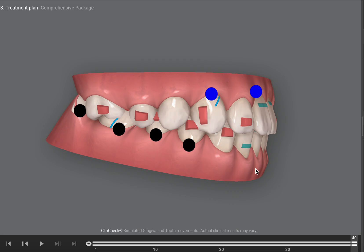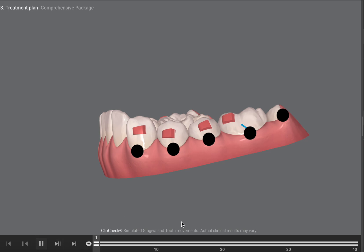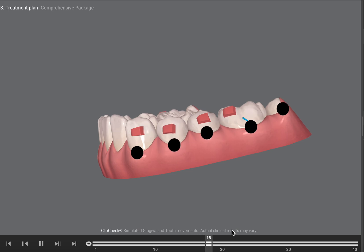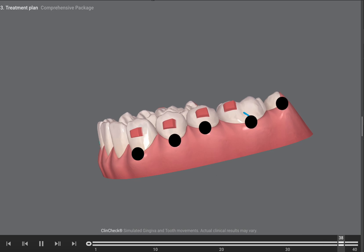Now this is a growing child, so we're doing a lot of leveling of curve of spee. As you see here, we are extruding his posteriors in the lower arch and intruding the anteriors in the lower arch. So there is that leveling of the curve of spee. I'm not a big fan of any optimized attachments; I go for conventional as they work really well.